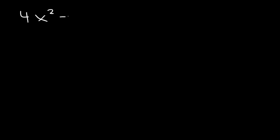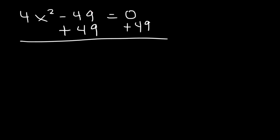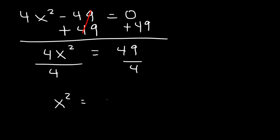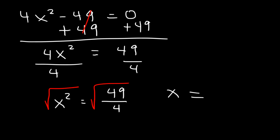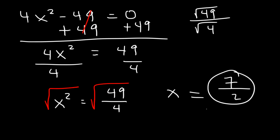4x squared minus 49 is equal to zero. Let's begin by adding 49 to both sides, so 4x squared is equal to 49. Next, divide both sides by 4. Now we take the square root of both sides. The square root of 49 over 4 — if you need to find the square root of a fraction, this is equivalent to the square root of 49 over the square root of 4. Take the square root of each number separately: the square root of 49 is 7, and the square root of 4 is 2.